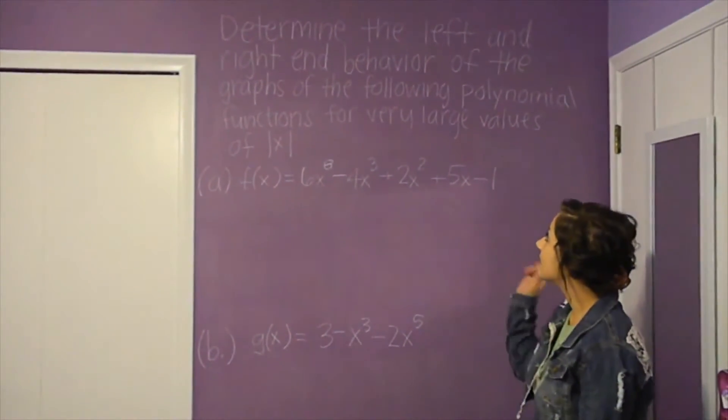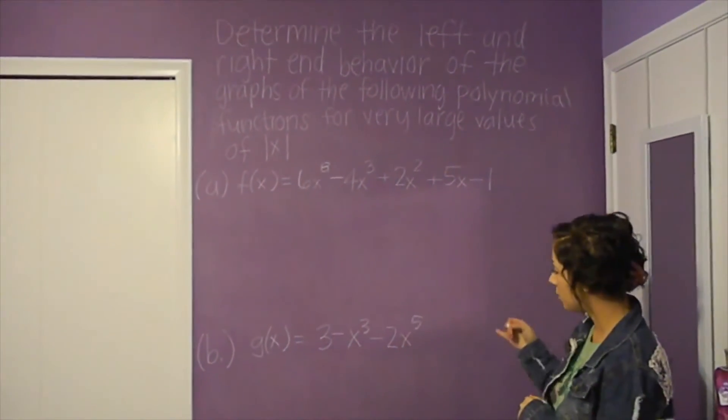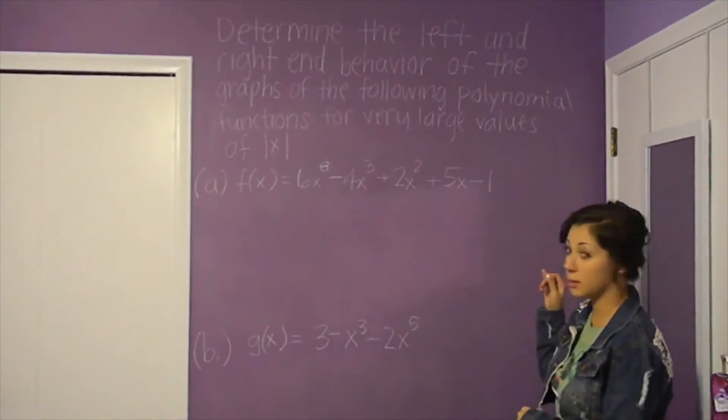We're going to determine the left and right end behavior of the graphs of these polynomial functions for very large values of |x|.